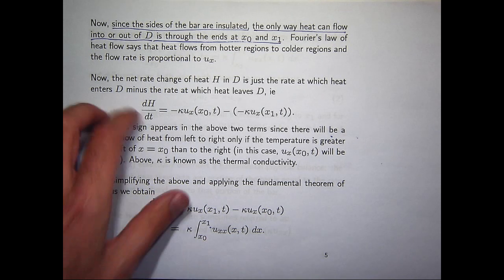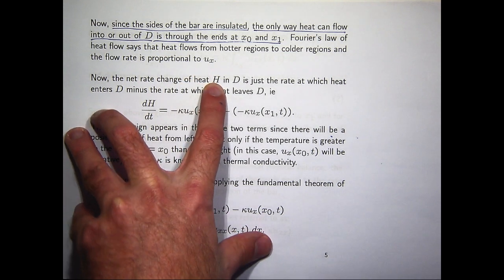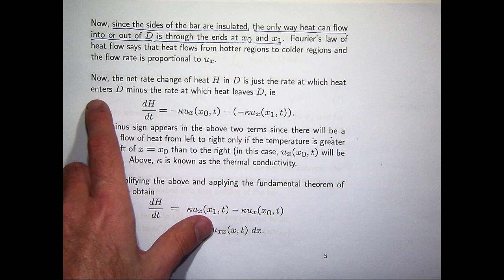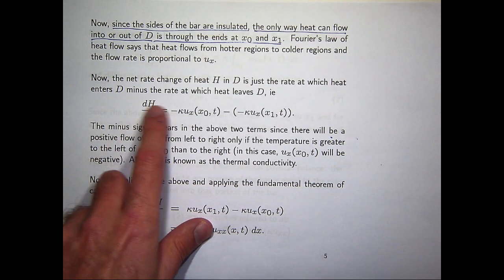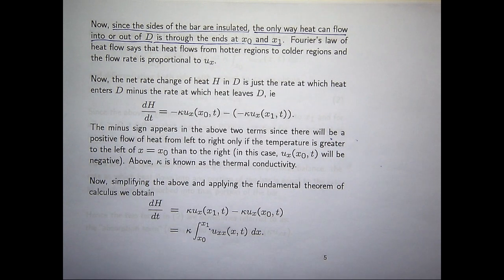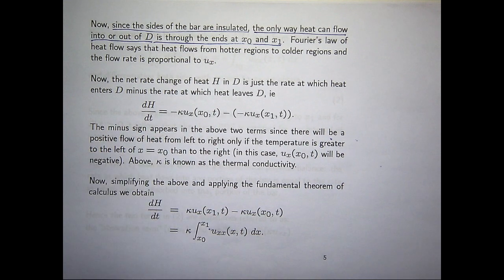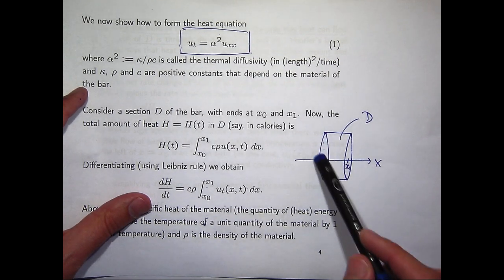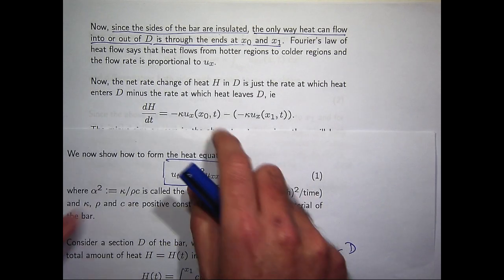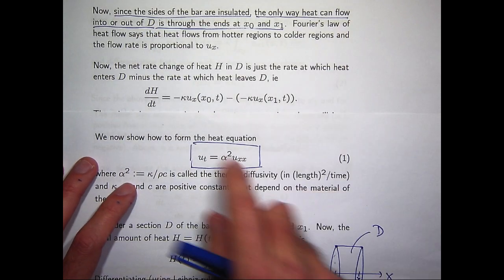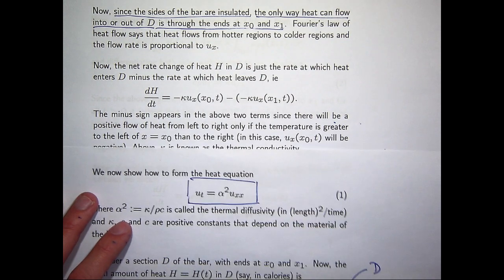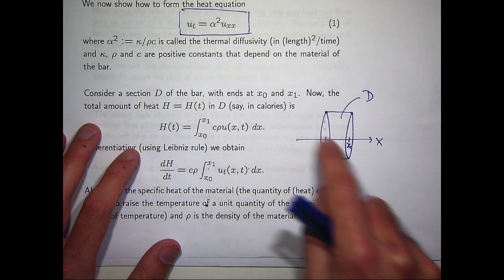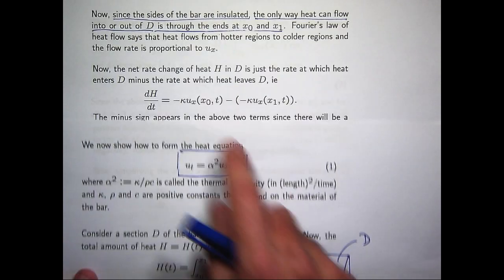Well, the net rate of change of heat H in our little region D is just the rate at which heat enters D minus the rate at which heat leaves D. So, if you look at, say, the flow over this and this, say, the rate at which heat enters D, say, from left to right, we come up with this term. And similarly, over this boundary, or this edge, you can come up with this term here.